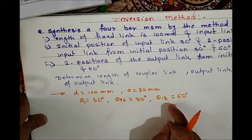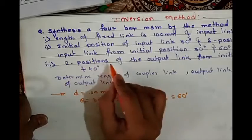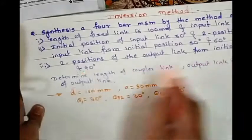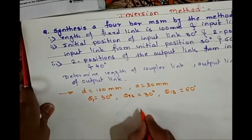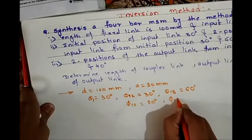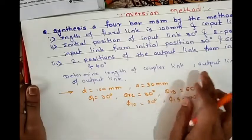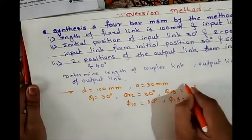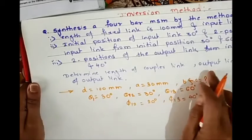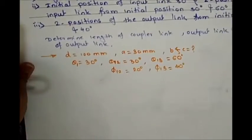So from the initial position, the next position is at 30 degrees, and the third position is at 60 degrees from the initial position. The second position of the output link from the initial position: phi 1-2 is equal to 20 degrees and phi 1-3 is equal to 40 degrees. We need to determine the length of coupler link B, output link C, and the initial position of the output link.